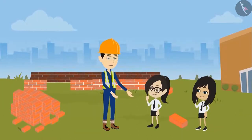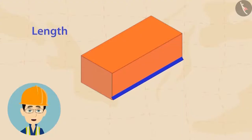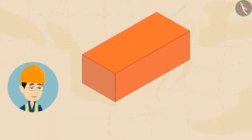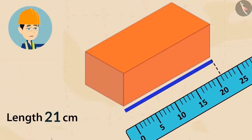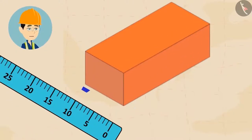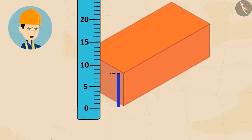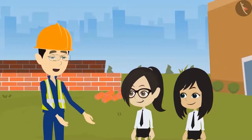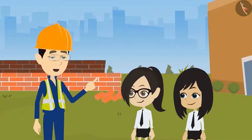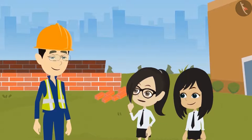To measure a brick, we measure its length, breadth, and height. The length of this brick is 21 centimeters, breadth is 10 centimeters, and height is 8 centimeters. You can find bricks of different sizes, but for this construction we are using bricks of this measurement.